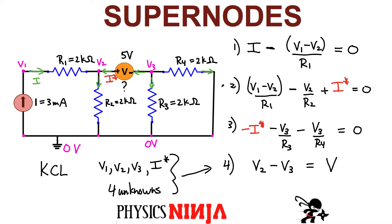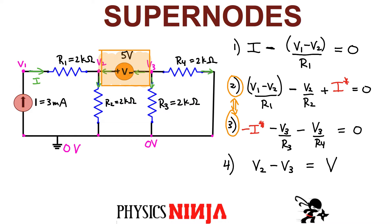What we're going to do now is use supernodes to simplify this. What supernodes does is allow us to skip a step and combine both of these equations into one simpler equation. On the next page, I'll show you what a supernode is and how you write Kirchhoff's current law for it. What I've defined here in this orange box is the supernode — it combines nodes V2 and V3. Instead of having two independent nodes, they become one bigger equivalent node.